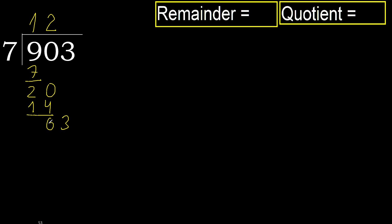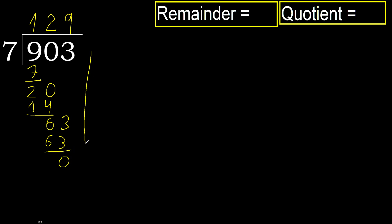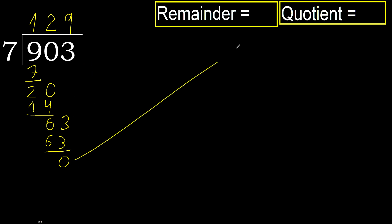63. 7 multiplied by 9 is 63, which is not greater. Subtract. Next. There is no next number, therefore finish it.